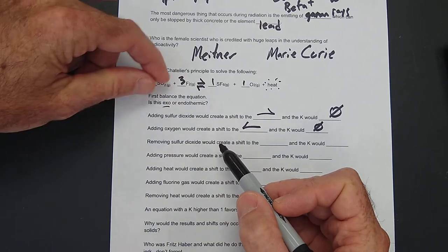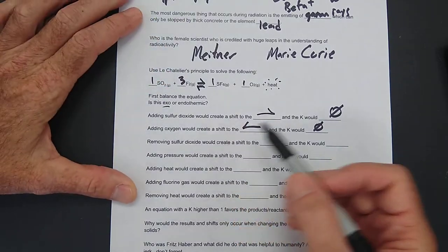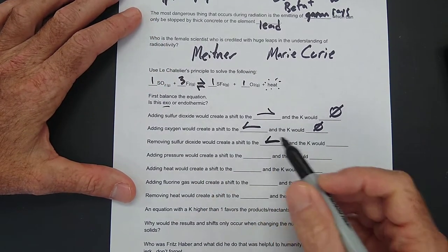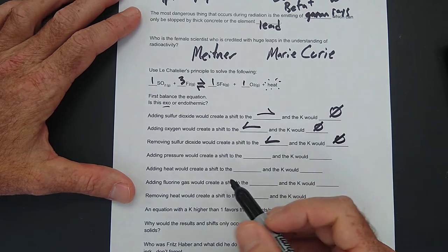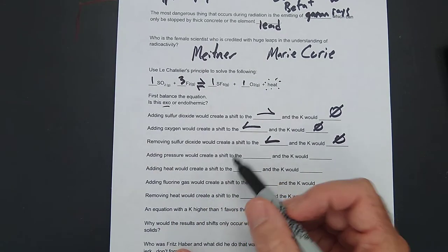Adding oxygen would create a shift to the left, and the K would not change. Removing sulfur dioxide. We pull some of this out. We're going to have to shift to the left and make more of that, and the K would not change.